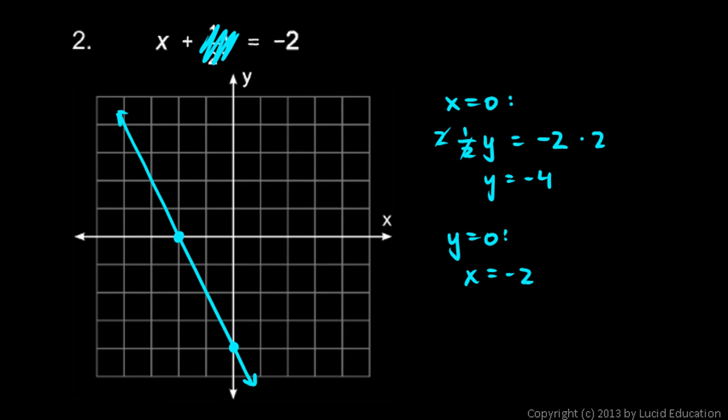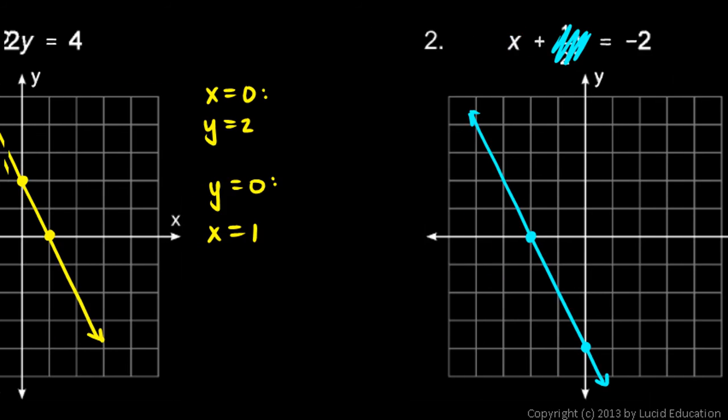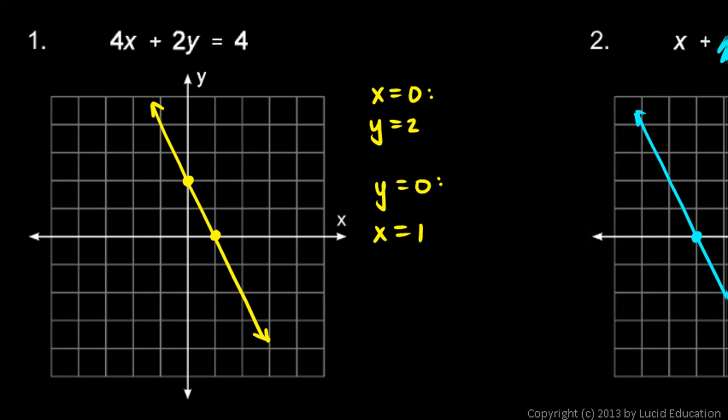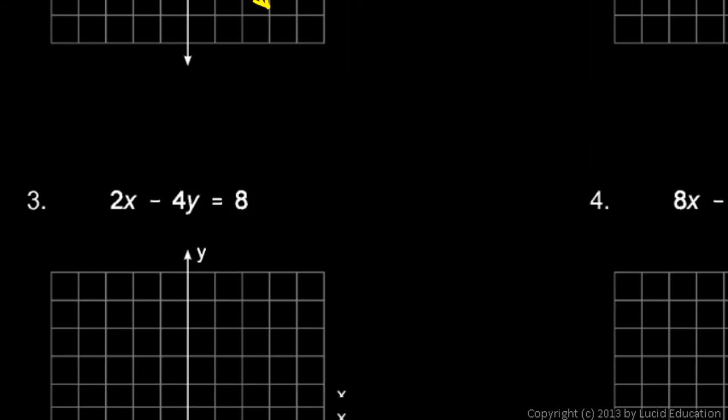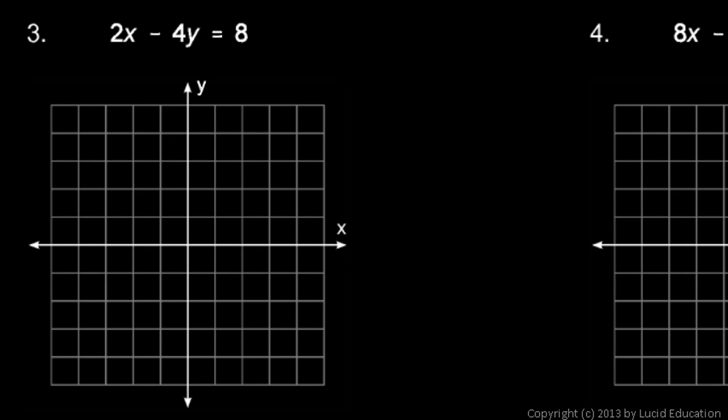Okay. Let's look at number three. 2x minus 4y equals eight. Okay, so let's let x equals zero first. If x is zero, that leaves us with negative 4y equals eight. Don't forget that negative. And so y has to be negative 2.